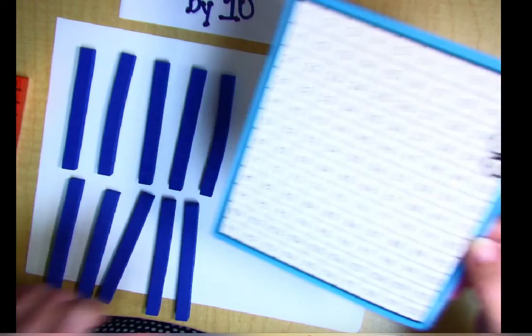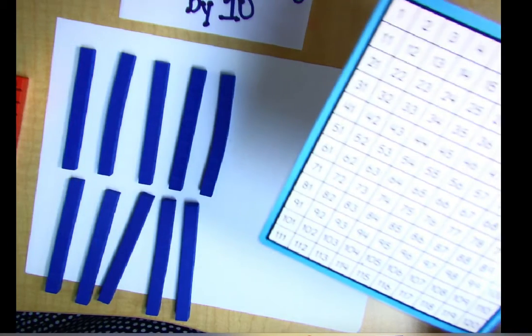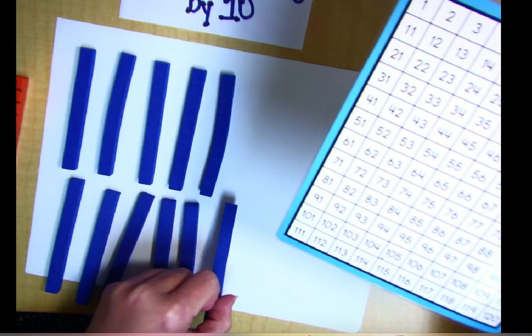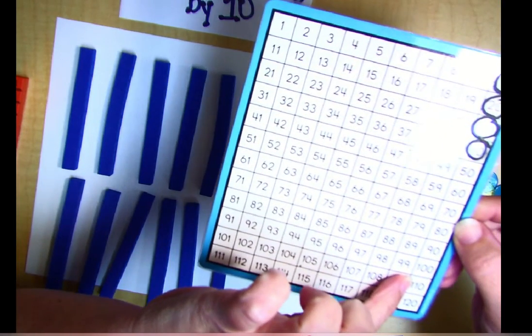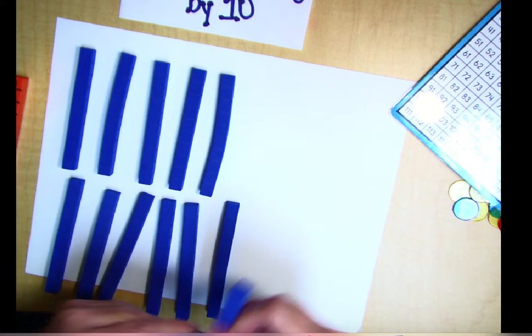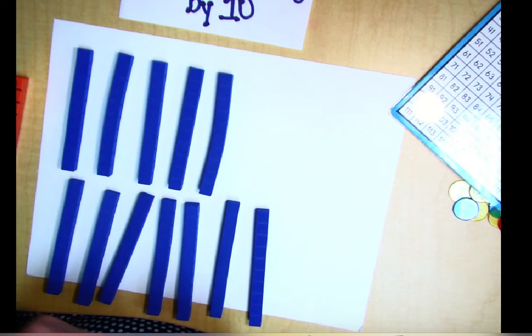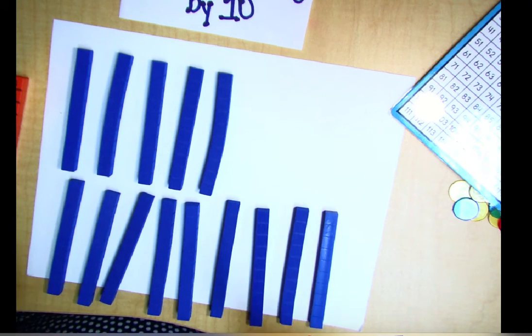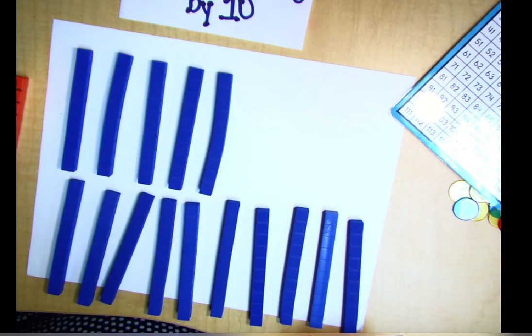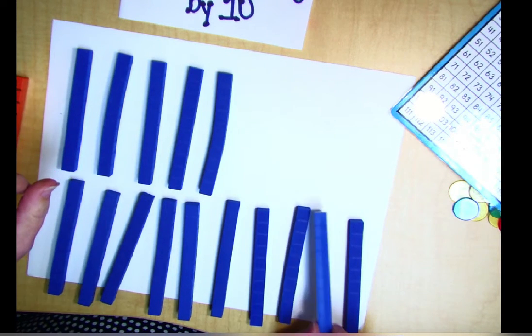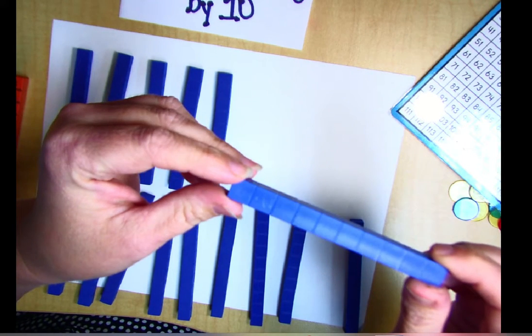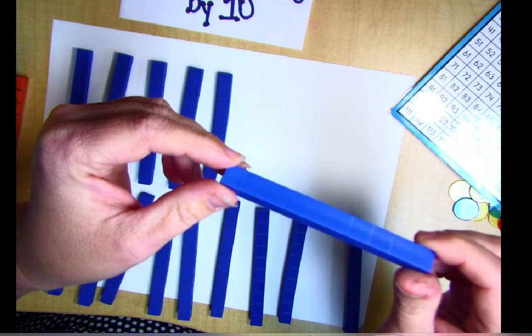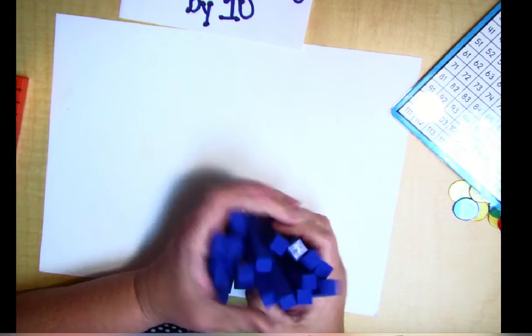It's 100 little blocks right there. Well, what if we add one more? 110, 120, 130, 140, 150. So we have 150 little blocks on here because each stick is worth 10 little blocks. Let's count that again. You count with me.